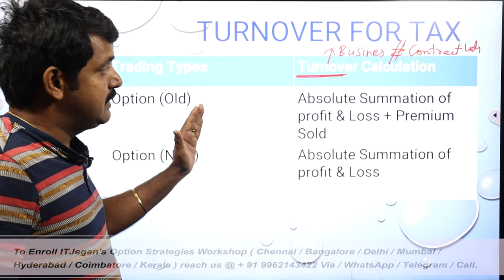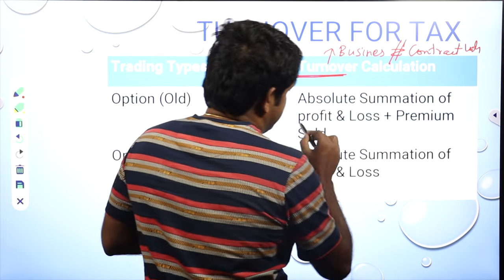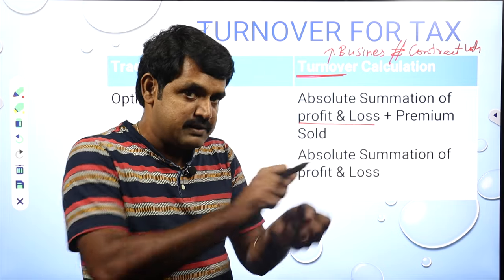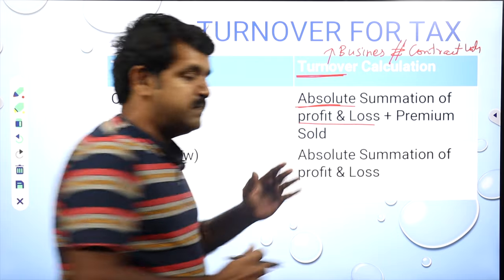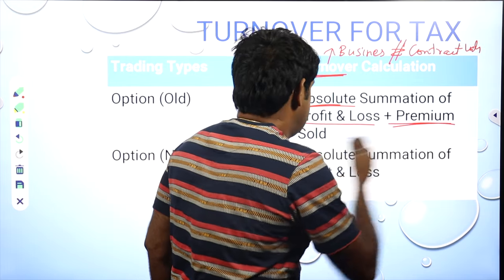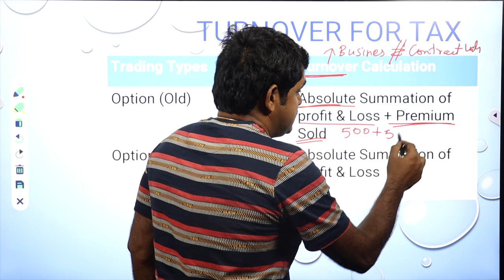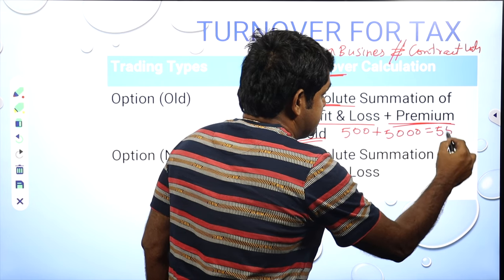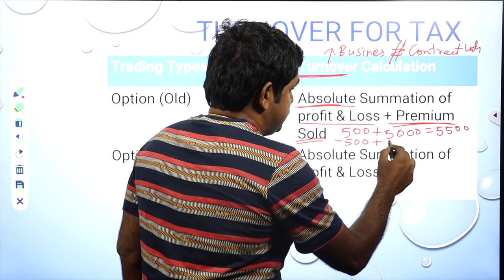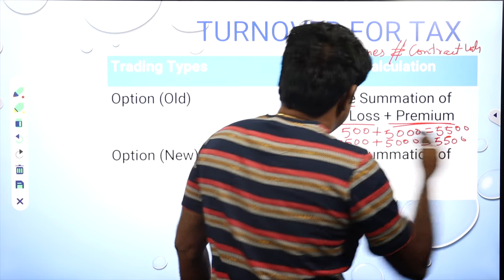How was business turnover calculated in the old way? It was simple: you find your profit and loss, and for the loss you do not take it as a negative — you add both profit and loss in absolute terms. That means you sum them without considering the sign. Then you also add the premium sold. For example, 500 rupees profit plus 5000 rupees premium sold equals 5500 rupees turnover. If there is a 500 rupee loss, you treat it as positive and add it similarly.